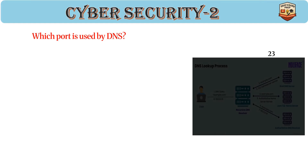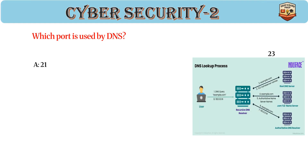Which port is used by DNS? Answer: C. 53. DNS operates on port 53. Translates domain names to IP addresses. Supports TCP and UDP protocols.